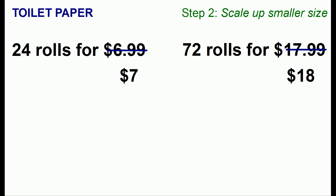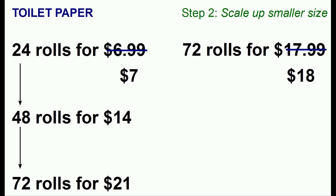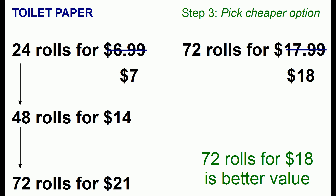The next step is to get the two quantities equal, and the method we're going to use is to scale up the smaller size. In this case 24 rolls is the smaller size and we're going to scale this up until it's 72 rolls. If we buy one package we get 24 rolls. If we buy two packages we get 48 rolls for a cost of $14. If we buy a third package we'll end up with 72 rolls for a cost of $21. That brings us to step 3: now we have two quantities of 72 rolls and we simply need to pick the one which is cheaper. It's very obvious that 72 rolls for $18 is the better value.